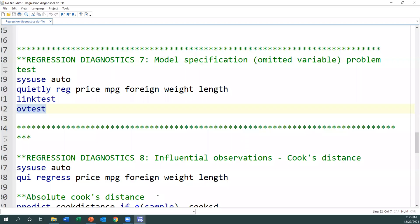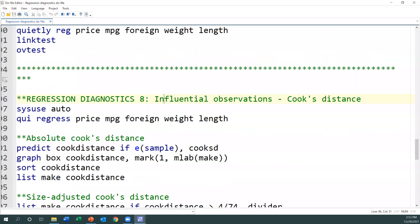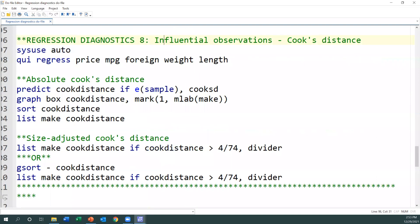I have my Stata here open. I start with a new file. We look at Cook's distance way of checking influential observations. As before, we just run this to load the data and also run the full model. Then next, we will check for the Cook's distance. I'm going to predict Cook's distance based on the regression that I have performed. Next, I will graph the Cook's distance.